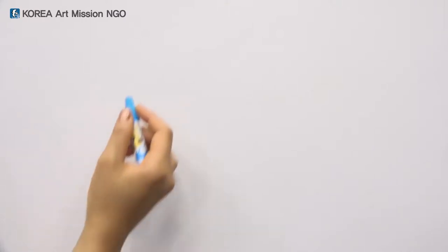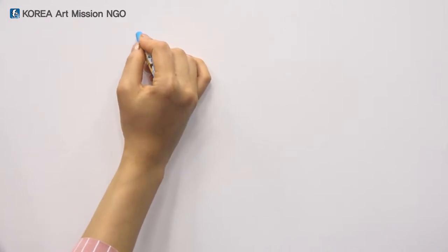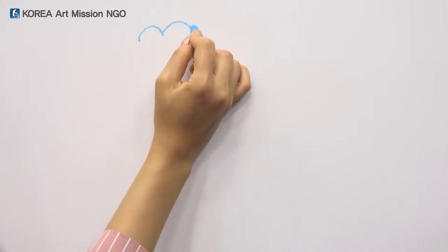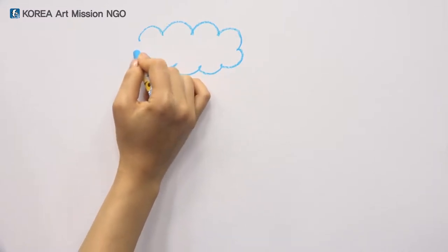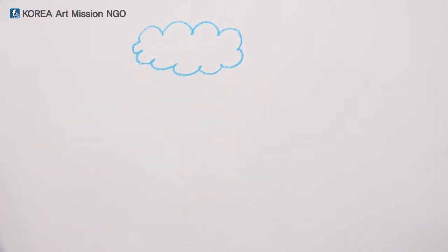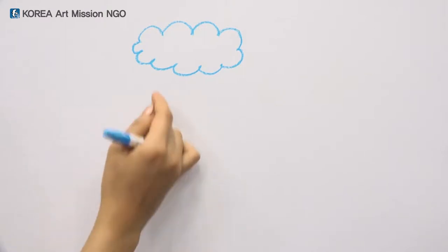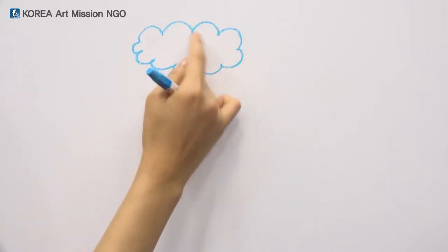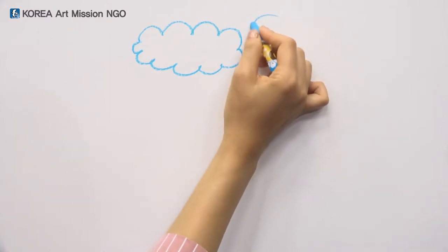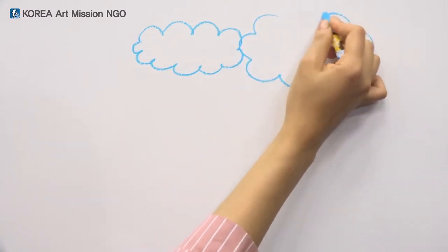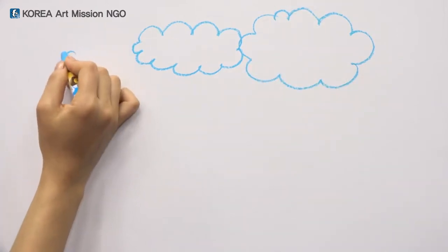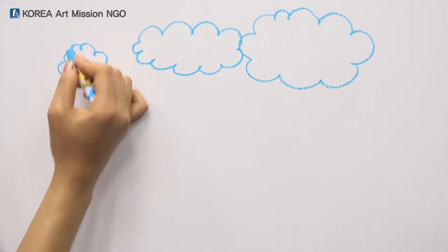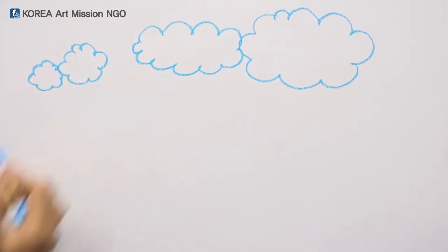Let's get the clouds first and then hide the sun. Draw a circle with curved lines. Why don't we draw a cloud family? This slender cloud — mom cloud. And this fat one — dad cloud. And this is brother cloud. And this is baby cloud.